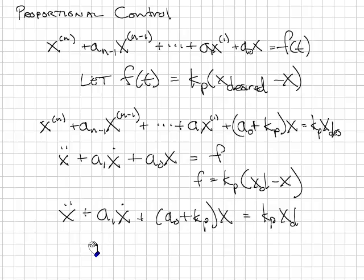And the characteristic equation is s squared plus a1 s plus a0 plus kp equals 0. We choose the value of kp so that the poles of the system or the roots of the characteristic equation are at the location that we desire.